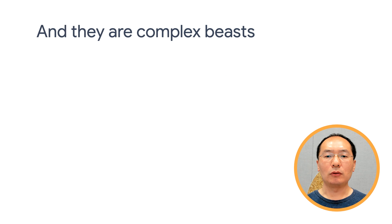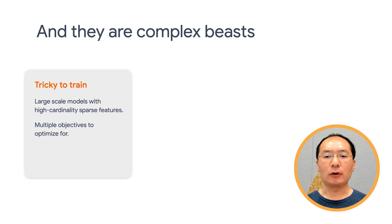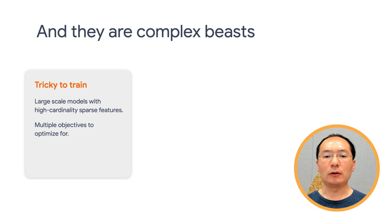Despite their ubiquity, recommendation models are complex, tricky to train, evaluate, and deploy. They're tricky to train for a couple of reasons. First, they have large-scale models that rely on high-cardinality sparse features — embedding vocabularies can routinely run in the tens of millions. Second, we have multiple objectives to optimize for. If you're using YouTube, you can click on a video, like it, or dismiss it, or even comment or share it.